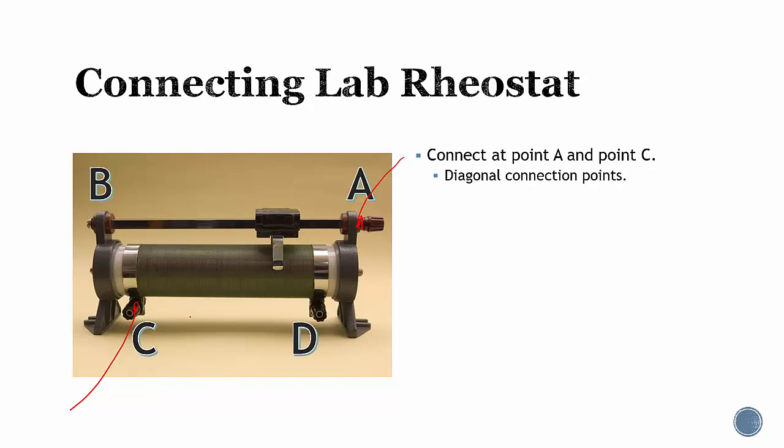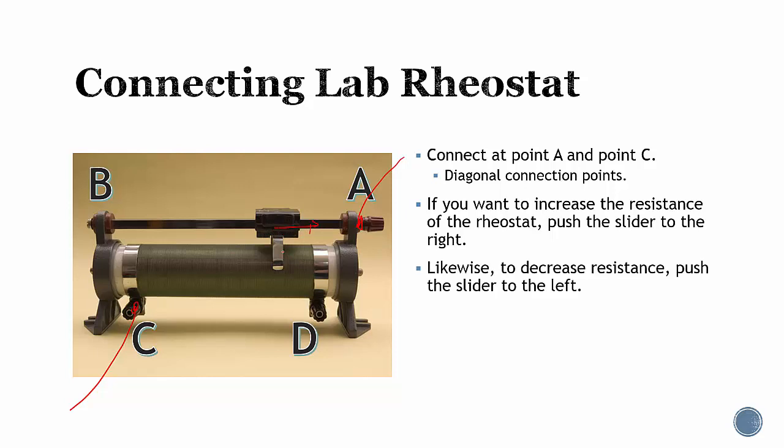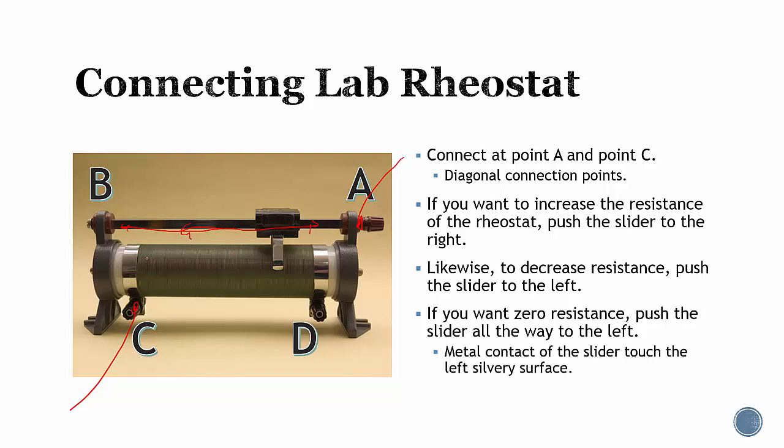Remember that generally it's diagonal. If you want to increase the resistance of the rheostat, push the slider towards the right. Likewise, to decrease resistance, push the slider towards the left. If you want zero resistance, push the slider all the way to the left until the metal contact of the slider connects to the left silver surface.